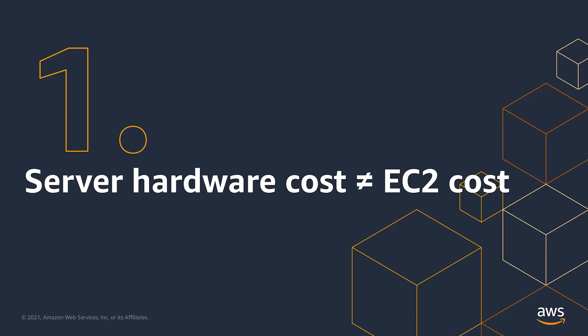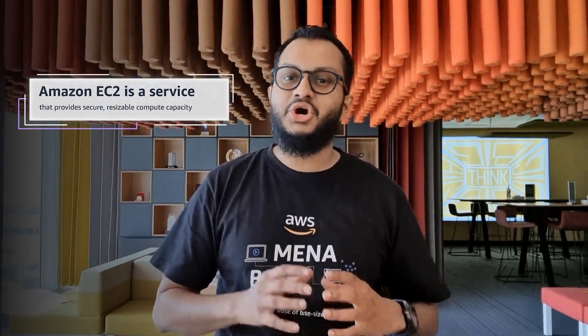Misconception number one: the cost of server hardware is not the same as the cost of EC2. EC2 is a service with an SLA that provides secure, resizable compute capacity in the cloud. The hardware that you have on-premises, on the other hand, is physical infrastructure that you need to install, configure, manage, secure, virtualize, and operate, and provide all the physical data center environments — including but not limited to cooling, power, fire protection, and physical security. So the cost of buying servers in your data center is not a like-for-like cost comparison with a secure managed service like Amazon EC2.